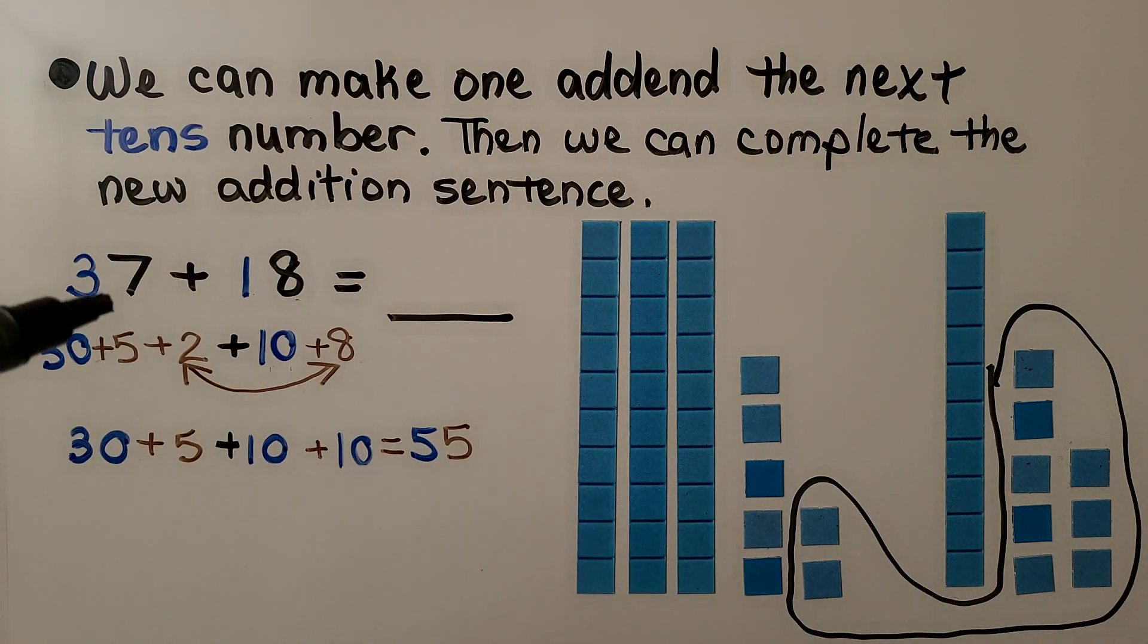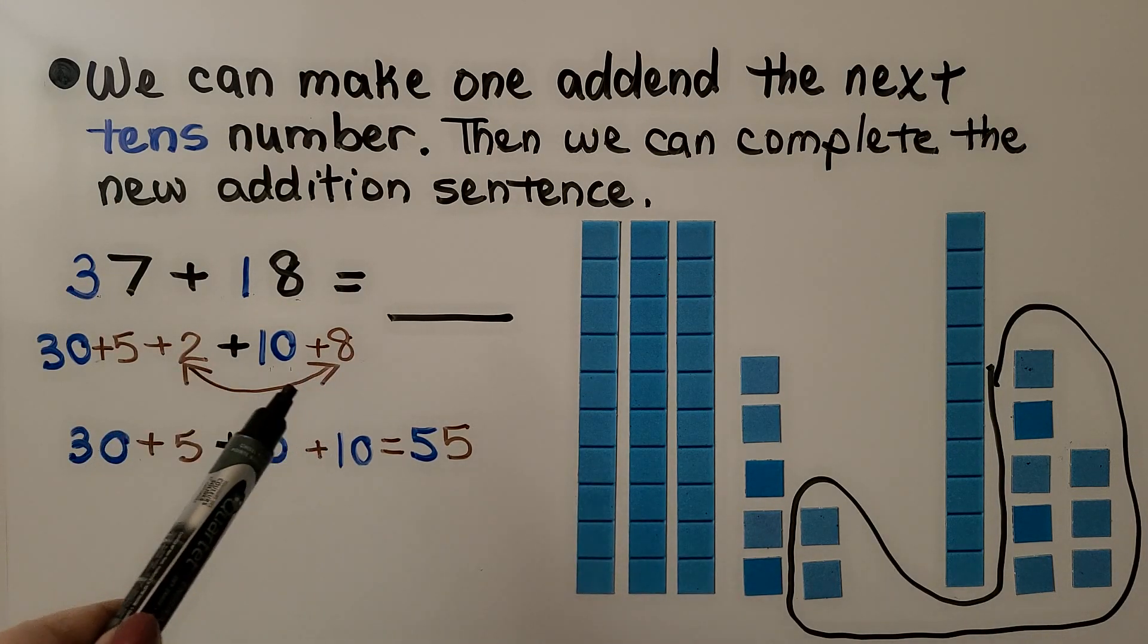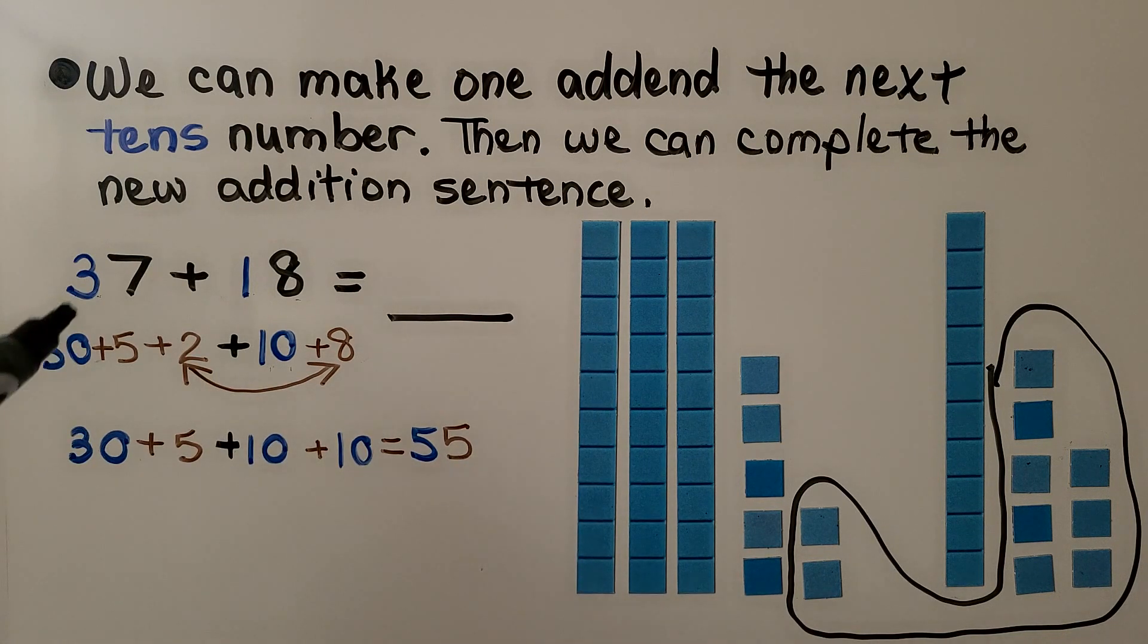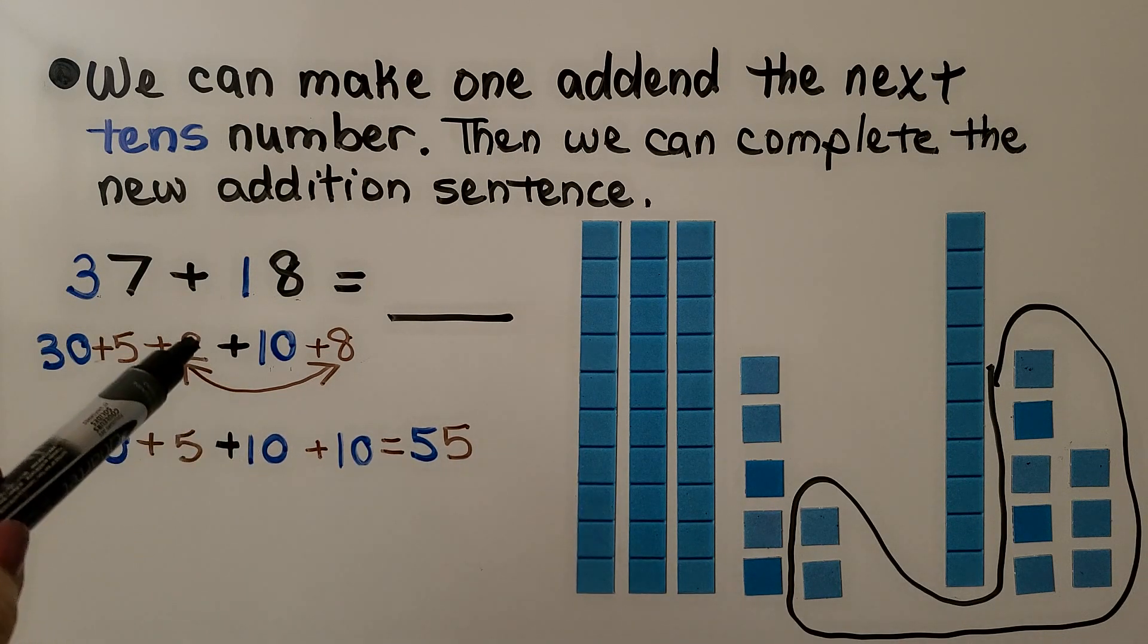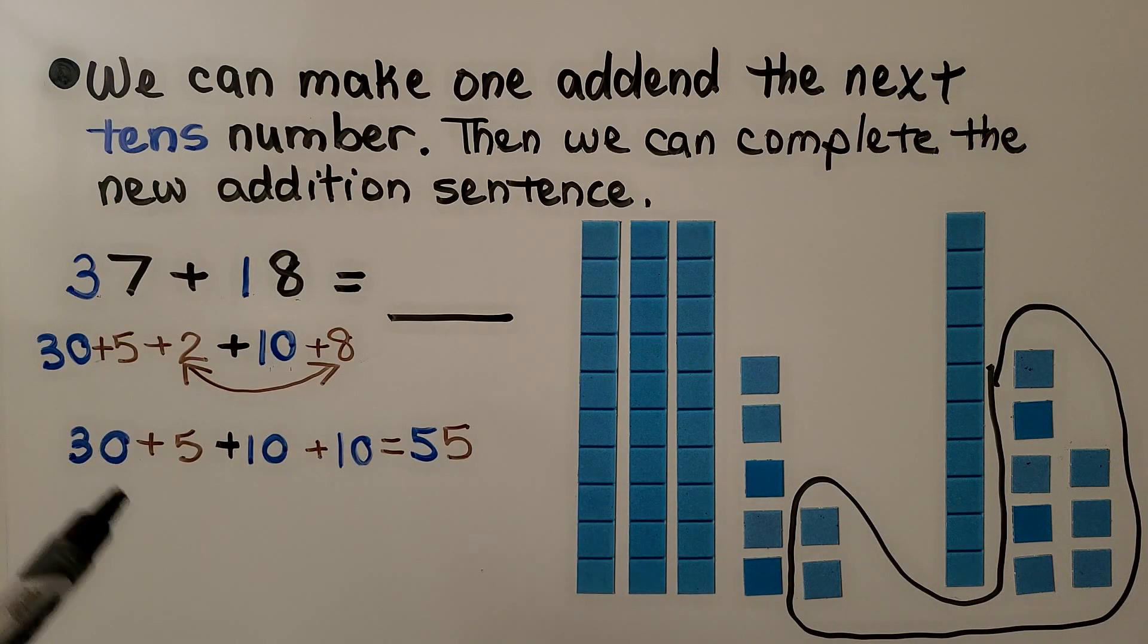What we did was we took the seven and we broke it into a five and a two, and we gave that two to the eight to make a ten. Now we have three tens, that's 30, plus five, plus the ten we made from the two and eight, plus that ten. We have 30, 40, 50, plus five more. That's equal to 55.